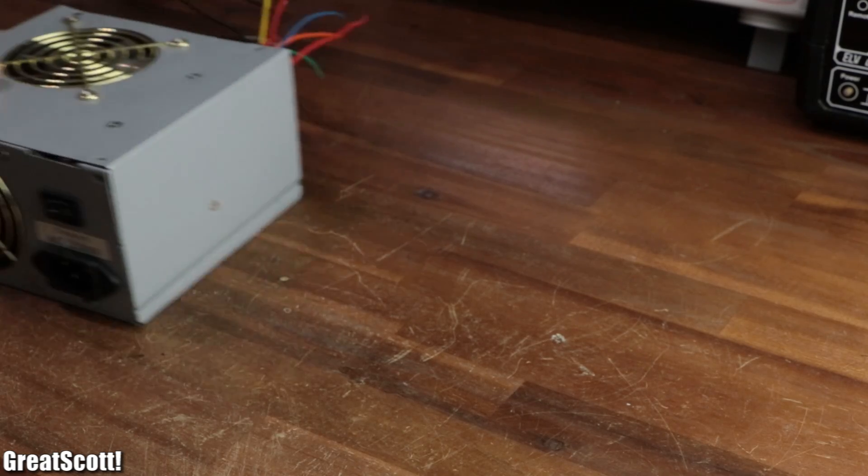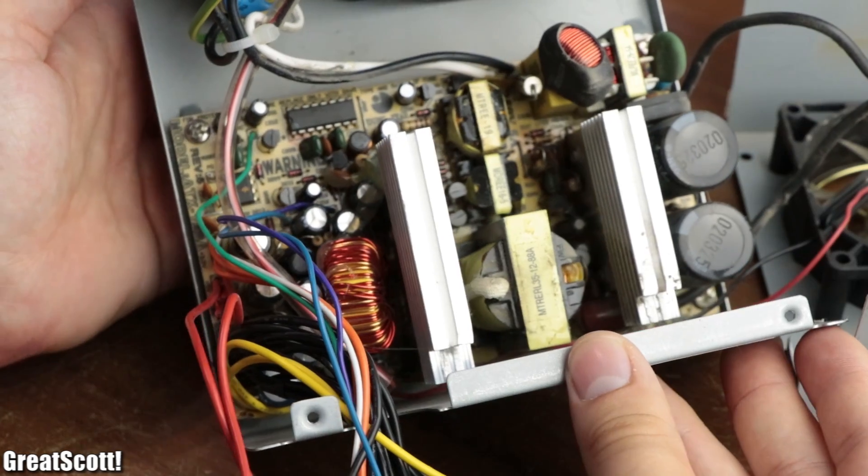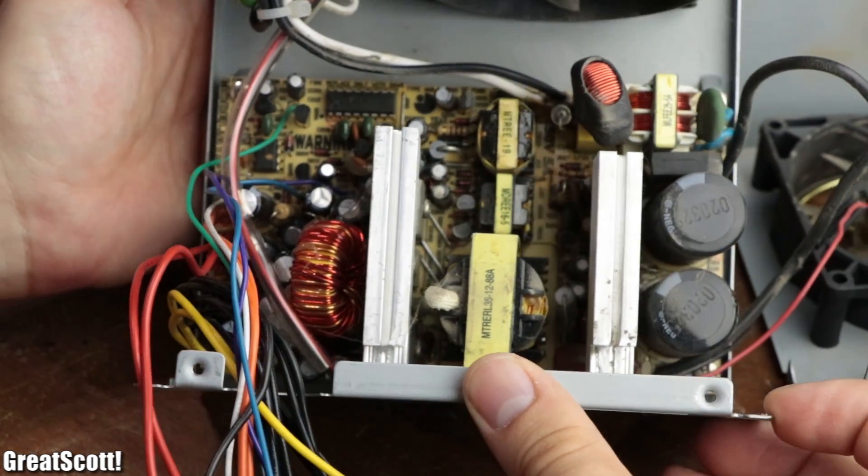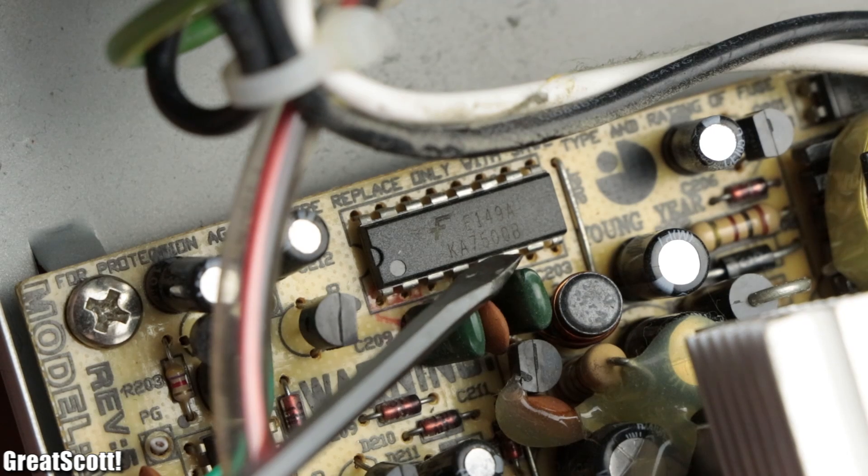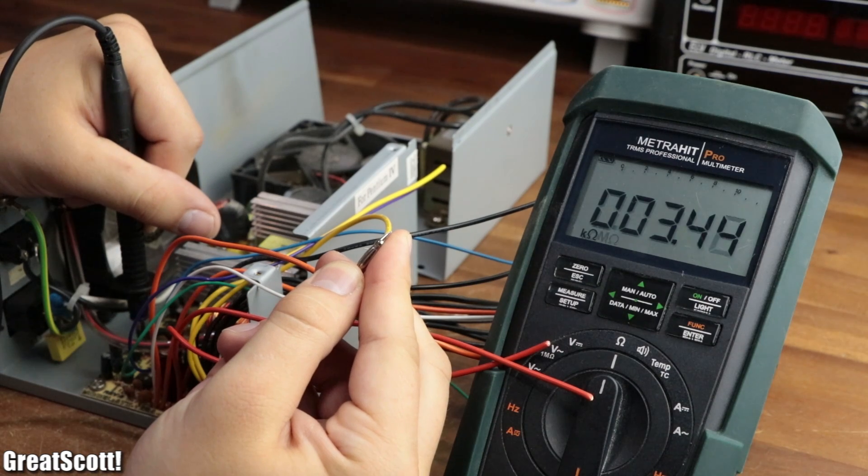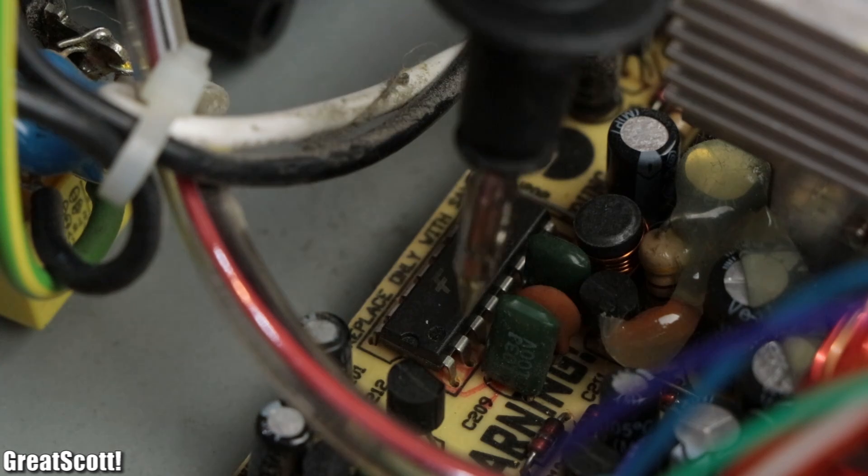But thankfully, I had a backup supply laying around, whose overall circuit looked a bit simpler. And best of all, its PWM IC, the KA7500, was directly connected to the 12 volt output through its pin 1.